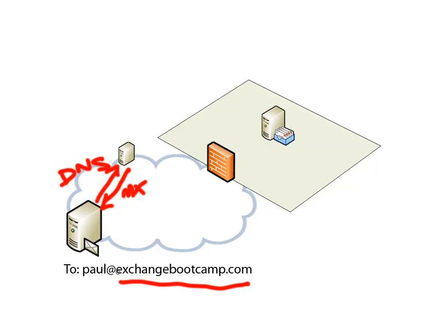The MX record will be another DNS name — it could be mail.exchangebootcamp.com, or it could be some completely different DNS name if exchangebootcamp.com used a third-party mail filtering service. For argument's sake, let's say it returns an MX record of mail.exchangebootcamp.com. The sending mail server then looks up the IP address through DNS for mail.exchangebootcamp.com, and that IP address is where it will attempt to make an SMTP connection to send that mail.